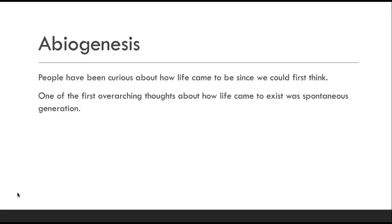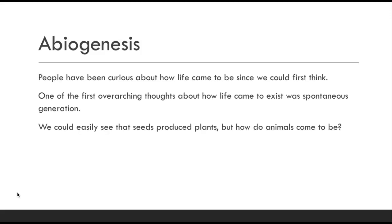The first idea was abiogenesis — this idea of life springing out of nowhere, this spontaneous generation of life. The reason for that is because you would have seeds that produced plants, but this is before any science. If you didn't really look at things too hard, you wouldn't really understand how animals could suddenly appear in an area.